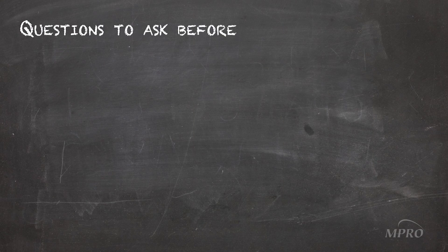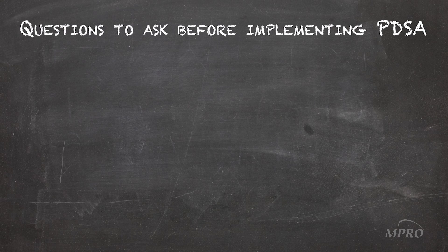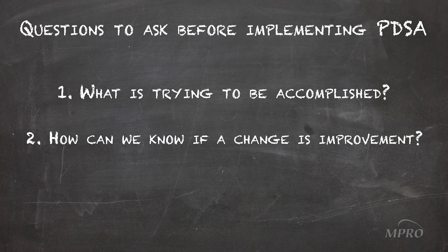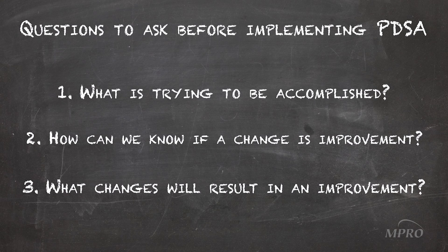The one that seems to be the fastest and easiest to teach as well as utilize is the trial-and-learn approach to quality improvement that combines three fundamental questions with the Plan, Do, Study, Act process. The three fundamental questions asked with the PDSA model are: number one, what is it that's trying to be accomplished? Two, how can one know a change is actually an improvement? And the last one, what changes can be made that will actually result in an improvement?